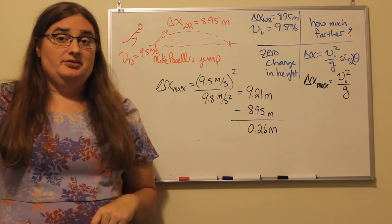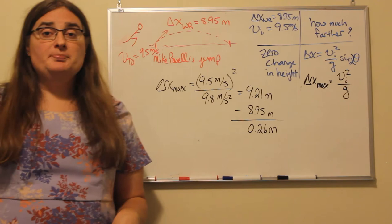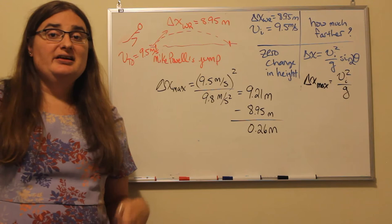The range equation says that the range that we travel as a projectile is our initial speed squared divided by the strength of gravity times the sine of 2 times the launch angle.